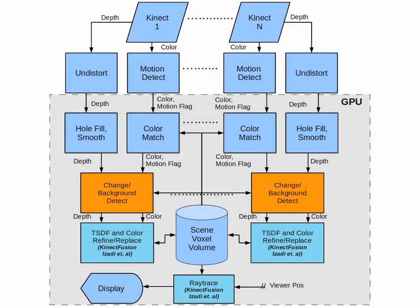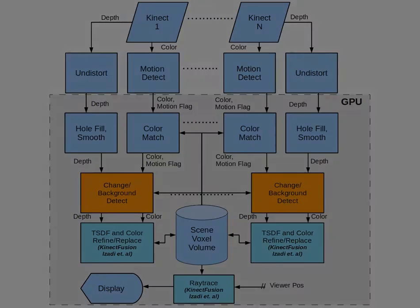We use both color and depth data to detect scene changes, allowing the accumulation of scene data to reduce noise while providing fast response to change. A 3D background model is stored within the volume to further reduce noise and allow occluded background objects to be retained over time.